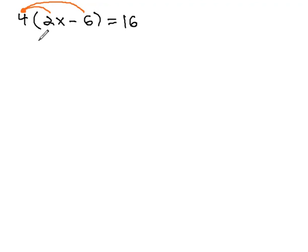When we distribute through the parentheses, 4 times 2x is 8x, and 4 times a negative 6 is negative 24, and this still equals 16.